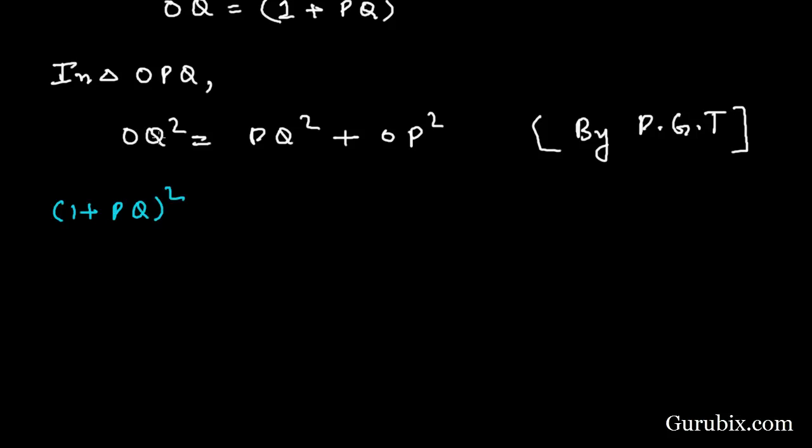So we have to find the whole square of 1 plus PQ squared. Here we have PQ squared, and we know that the value of OP is 7 centimeters. Now we shall calculate it.